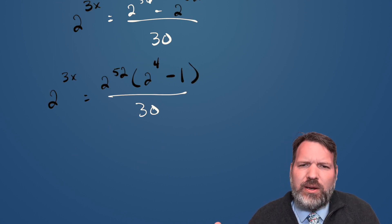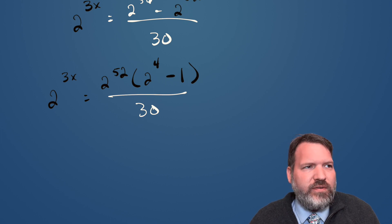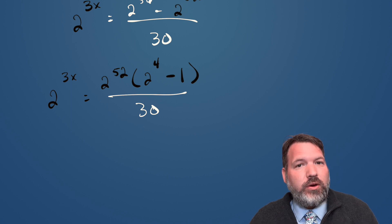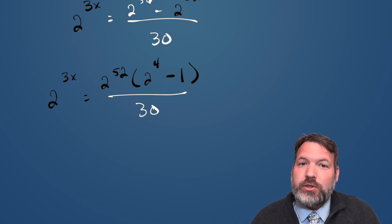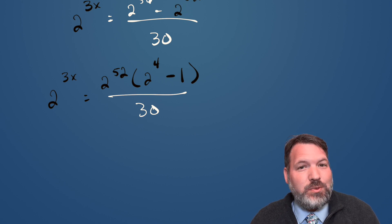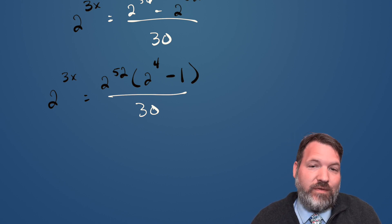You may have wondered from the very beginning, why didn't we just evaluate 2 to the 56th minus 4 to the 26th, and then take a logarithm or something to solve this one? And while we could, those numbers are awfully large. And so we're trying to avoid evaluating whenever we can. But 2 to the 4th minus 1, those numbers are small enough where we can evaluate.